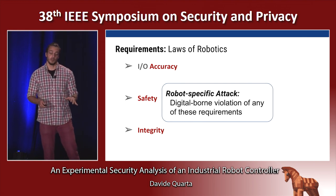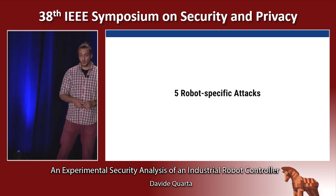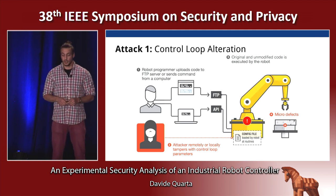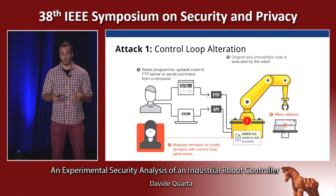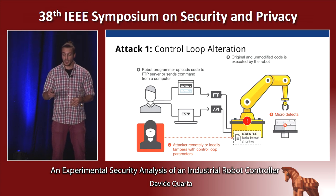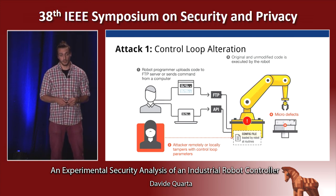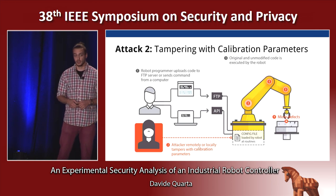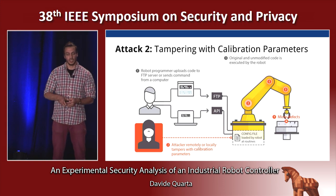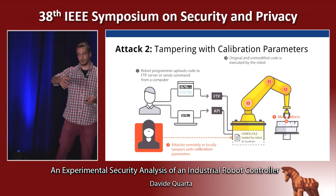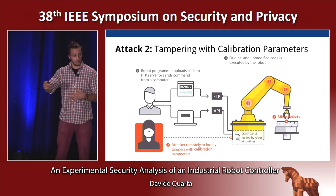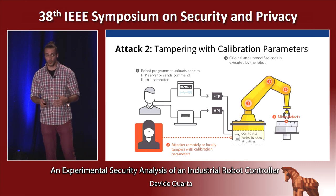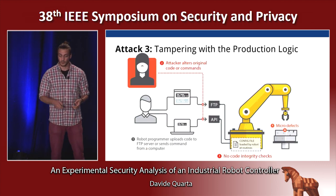Starting from these requirements, we developed five robot-specific attacks. The first is control loop alteration, where the attacker remotely or locally tampers with control loop parameters — for example, PID parameters — allowing the introduction of micro defects in production. The second attack is similar: the attacker tampers with calibration parameters. The controller needs to know the exact arm position to compensate for errors. These two attacks are feasible because there is no integrity check on config files — there is some mild cryptography, but it's easy to break.